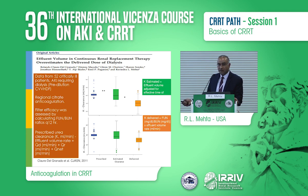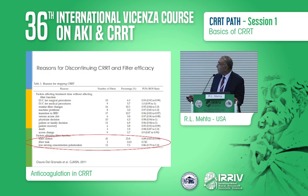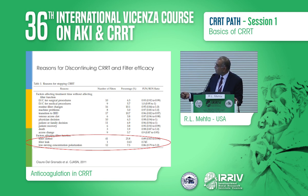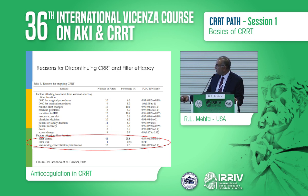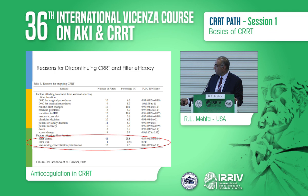This is actually what you do deliver if you measure it — there is a reduction over time. This is a reflection of the filters in our institution. The vast majority of them are being changed for a variety of different things, not for clotting — the patient went down for CT scan, or changed for someone going to surgery. Of the ones which are clotted, a significant number have this reduction of the FUN:BUN ratio. Importantly, filters which clot have the same FUN:BUN ratio as filters which don't clot.